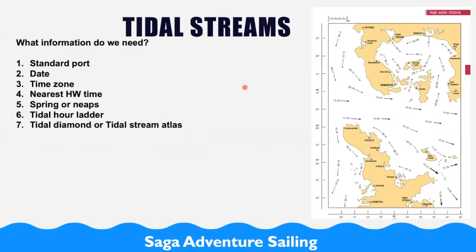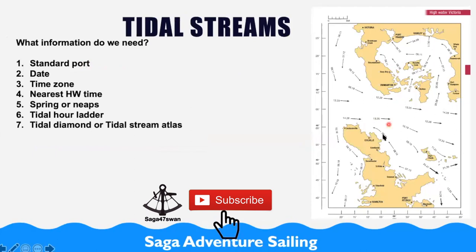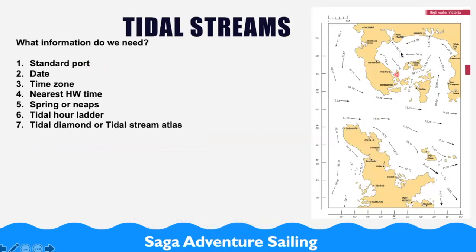Now, what information do we need? I've made a little checklist. We need to look at the standard ports. This is again from the training almanac. There are many standard ports — we have Calais, Port Fréjus, Normally, and Victoria as standard ports. What is very important is we need to find out which standard port the tidal chart or atlas is referring to, and it's mentioned at the top.